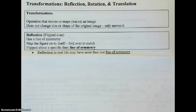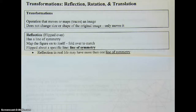This unit is all about rigid transformations, which are reflections, rotations, and translation. A transformation is an operation that moves or maps or traces an image somewhere else. It does not change the size or the shape of the original image — it just moves it.